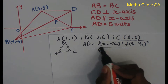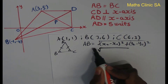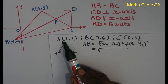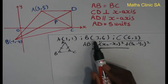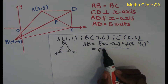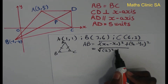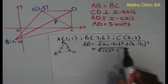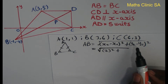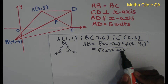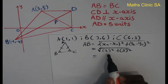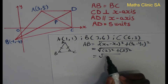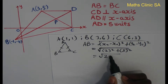Substituting: X2 minus X1 is 3 minus 1, so that's 2 squared, plus Y2 minus Y1 is 6 minus 1, so that's 5 squared. So 4 plus 25 gives us root of 29. That's the length of AB.